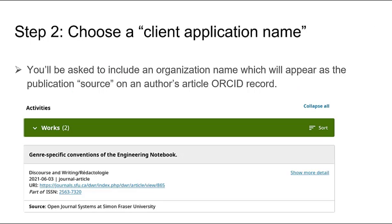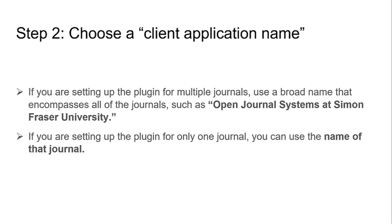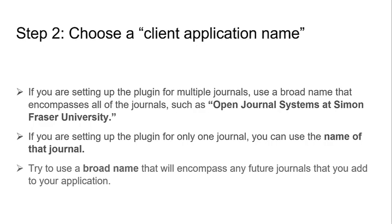The next two steps will help you to prepare to complete the application form for the member API. When you complete the form, you'll be asked to include the name of your client application. This will appear as the publication source next to the article information on an author's ORCID record. If you are setting up the plugin for multiple journals, you can use a broad name that encompasses all of the journals, such as Open Journal Systems at Simon Fraser University. If you are setting up the plugin for only one journal, you can use the name of that journal. However, be aware that you will need to change the client application name if you add more journals in the future. It's best to use a broad name, such as the name of your institution or publisher, so that you can add future journals without changing the client application name.